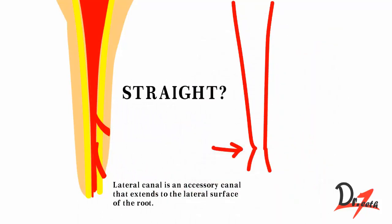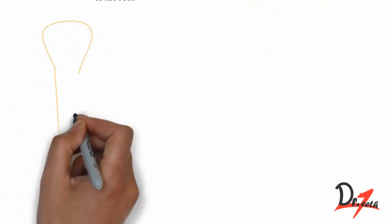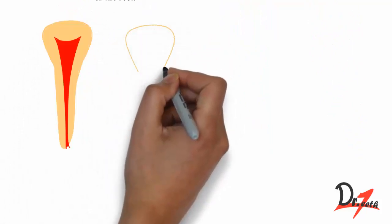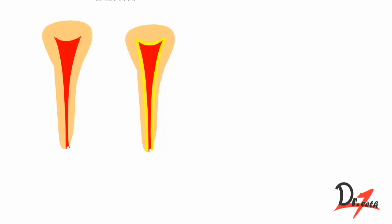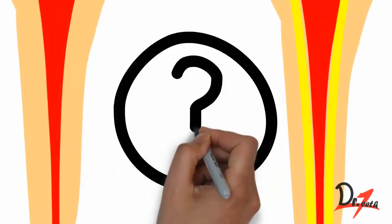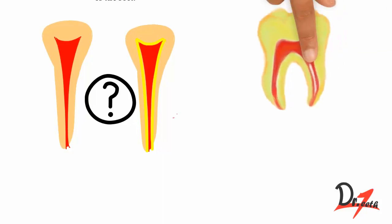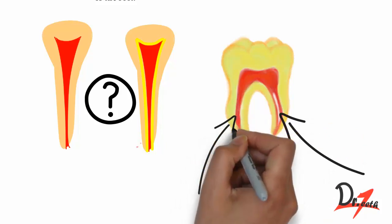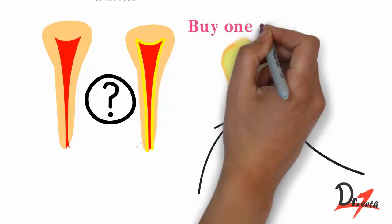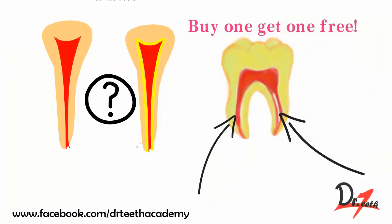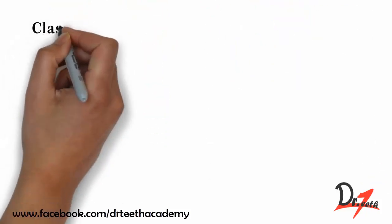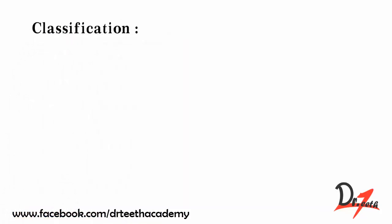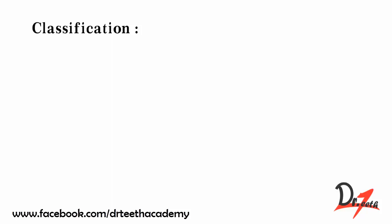Straight canals are uncommon — you will either find a constriction just before the apex or a curvature. In most cases the number of canals equals the number of roots, but exceptions exist. The mesial root of the mandibular first molar almost always has two canals, and even the distal root occasionally has two. The mesiobuccal root of the maxillary first molar frequently has two canals, and mandibular anterior and premolar teeth may also present two separate canals.